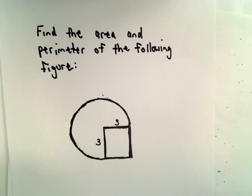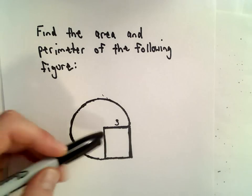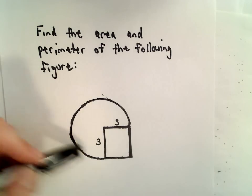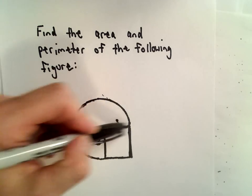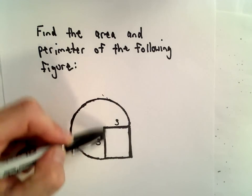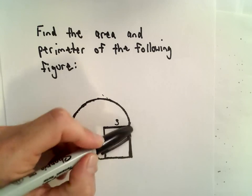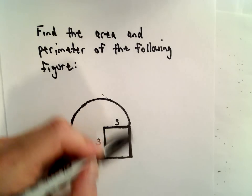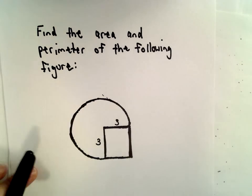In this example, we're going to find the area and the perimeter of this figure. This is going to be three-fourths of a circle, and then there's going to be a square sitting in the bottom right corner of that circle.